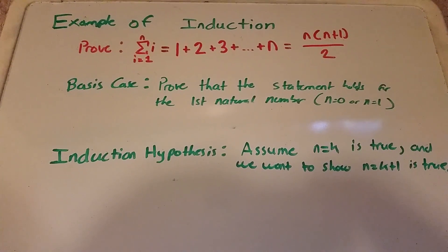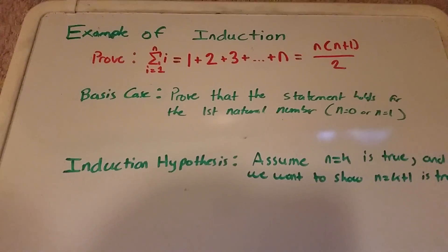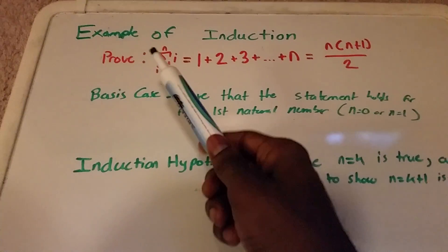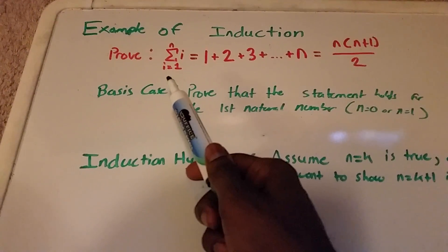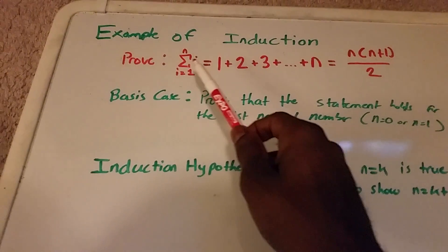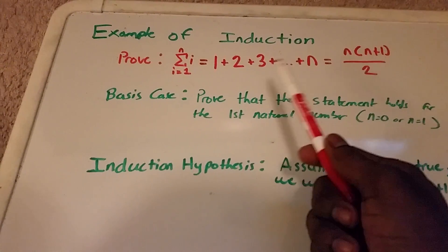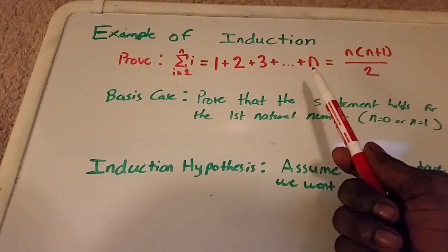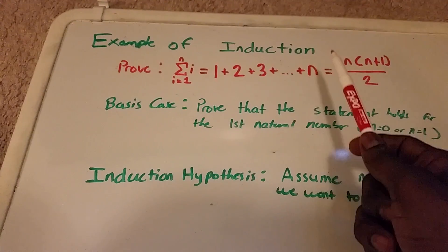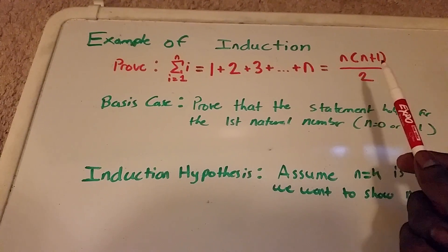Hey YouTube, this is an example of an induction proof. The summation from i equals 1 to n of i is equal to 1 plus 2 plus 3 plus dot dot dot plus n. And we want to prove that that is equal to n times n plus 1 divided by 2.